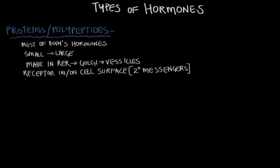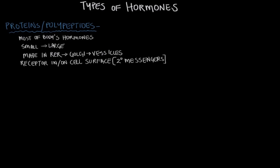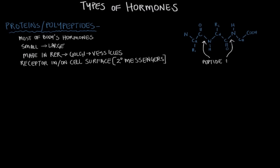I went ahead and drew in an example of a polypeptide hormone. I want to show you where the peptide bonds are, because these peptide bonds really pull this class together and unify them. Right in between the carbon and the nitrogen — here and here — those are the peptide bonds, these carbon-nitrogen bonds. So they can be small or large, but these links of amino acids used as chemical messengers are called proteins and polypeptides.